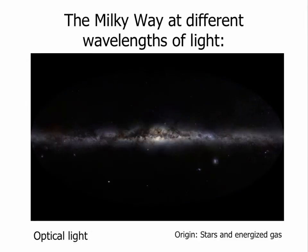Moving shorter in wavelength and higher in energy, this is the same optical light picture we saw earlier — just a reminder of what it looks like. Optical light tends to come from stars like the sun and other stars, and also in some cases from energized gas like the Orion Nebula.